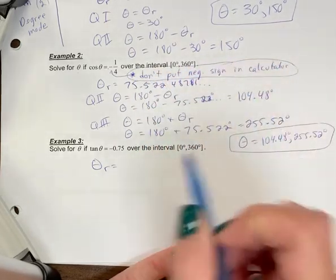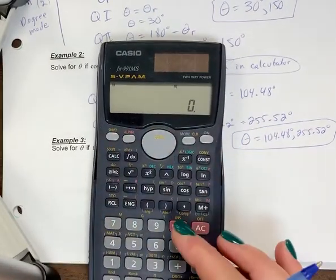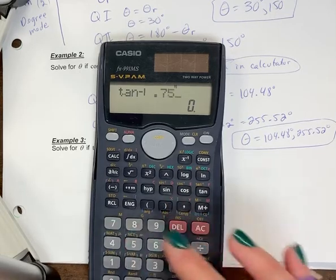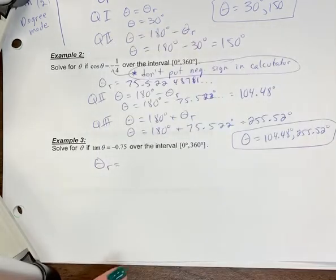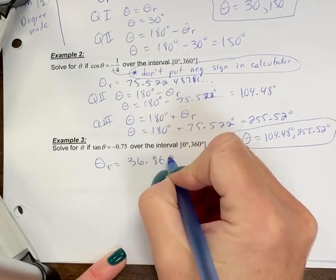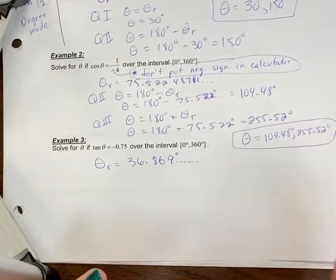So in my calculator, I'm going to go shift tan 0.75. And there's my reference angle, 36.869, et cetera. So 36.869. If I don't want to write them all, I just leave it in my calculator. That's fine. I always write three or four decimals.